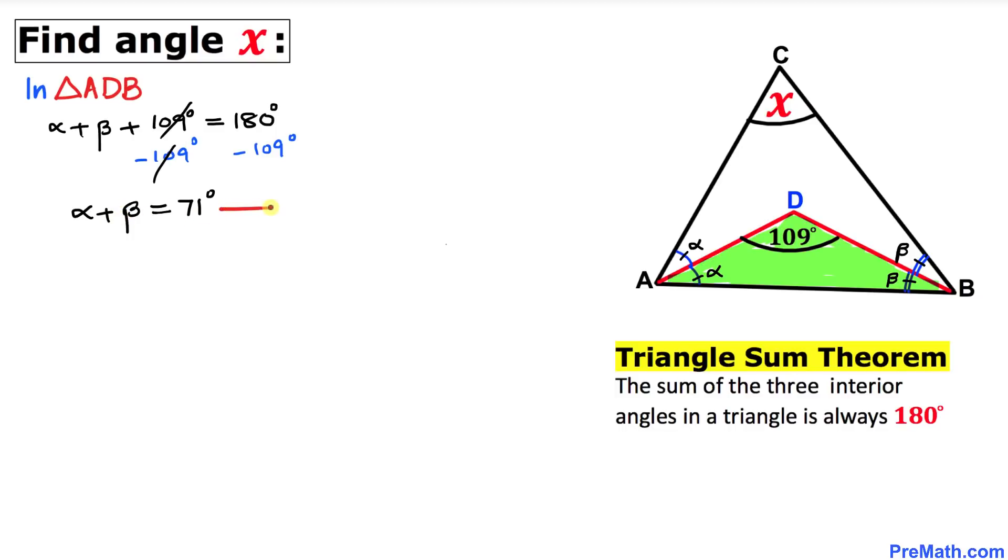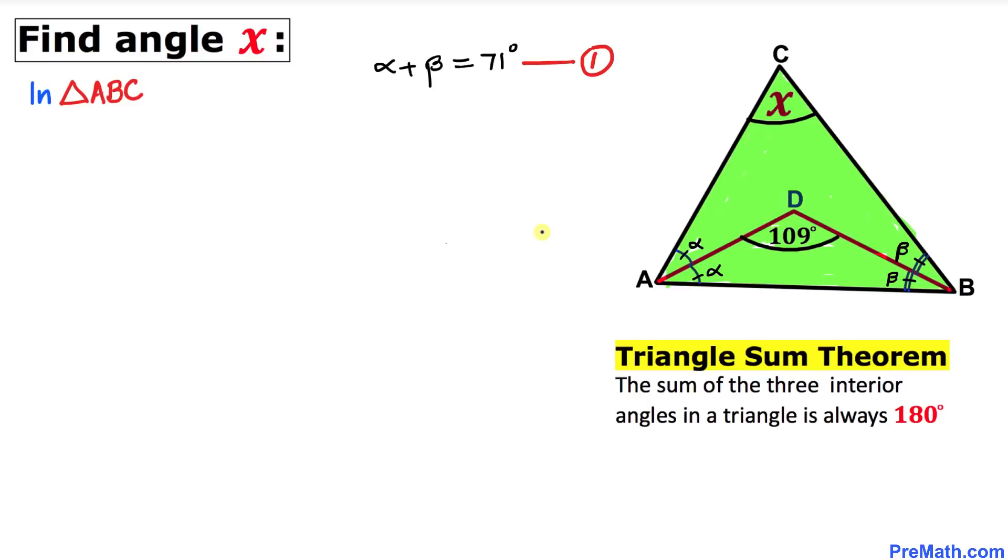Here's our next step. Let's focus on triangle ABC. We can see that this whole angle A is alpha plus alpha, which equals 2 alpha. Likewise, this whole angle B is beta plus beta, which equals 2 beta.